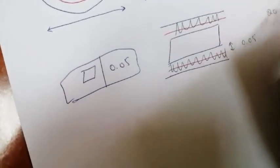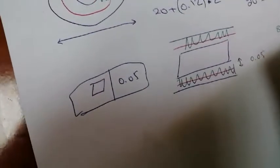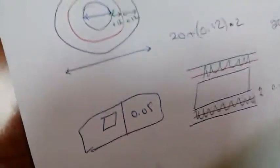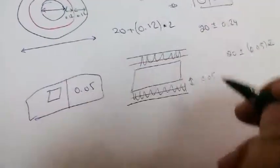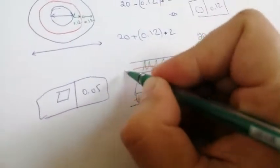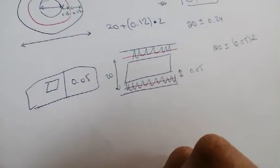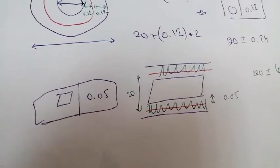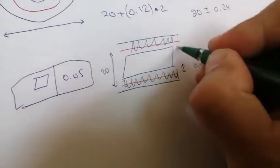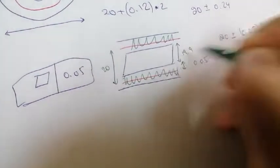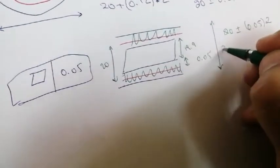We know for a fact that the flatness value here is 0.05, so it will be 20 plus or minus 0.05. That 0.05 times 2 is 0.1, so the blue (smallest) value is 19.9 and the biggest one is 20.1.